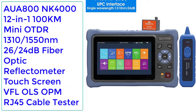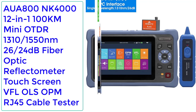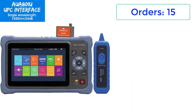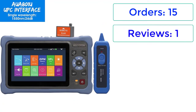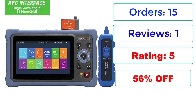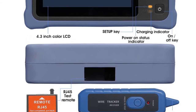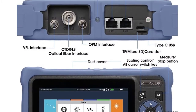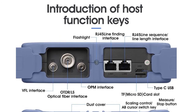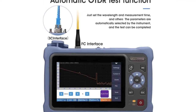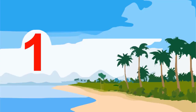Number 3: AUA 800NK — 4-in-1 100KM Mini OTDR, 1310/1550nm, 26/24dB fiber optic reflectometer with touchscreen, VFL, OLS, OPM, and RJ45 Cable Tester. Orders: 15, Review: 1, Rating: 5, 56% off, Price: $285.00. Brand: JoinWit, Connector Type: Hybrid, Size: 220×125×100mm, Certification: None, Origin: Mainland China, Fiber Type: Single Mode.